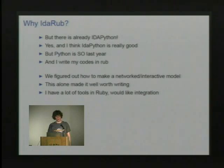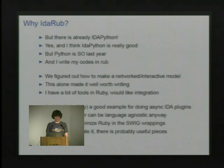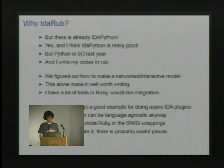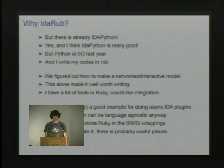Also, we have a lot of other tools that we've written in Ruby, so it would be nice to have a common ground. I guess all of the reverse engineering stuff is happening in Python now, so maybe it's a bad idea. The plugin itself is probably a good example for how to write IDA plugins that act asynchronously. One of the biggest problems with IDA is that it's all single-threaded, so if you want any sort of interactive plugins, you have to do some tricks.